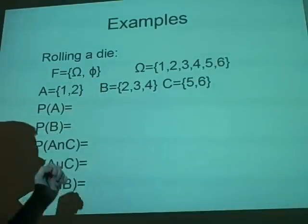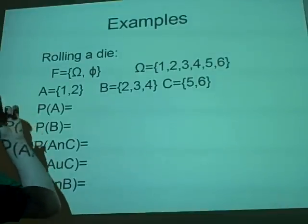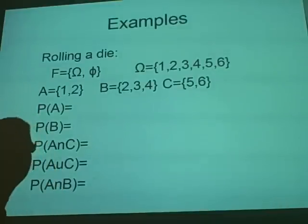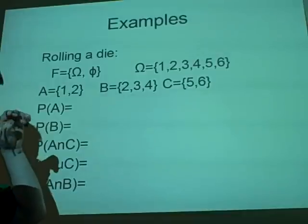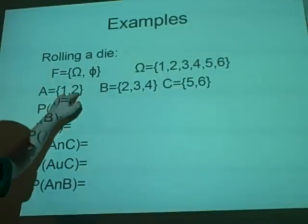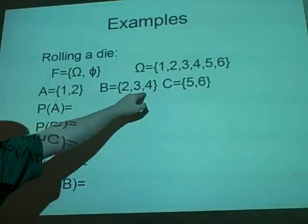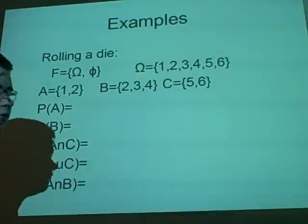Omega, what are the chances on a dice? We have 1, 2, 3, 4, 5, 6. This is a fair dice, by the way. So, we have our different parts here. We have A, which is 1 and 2. B, which is 2, 3, 4. And C, which is 5, 6.